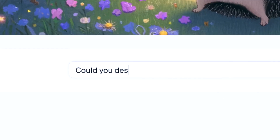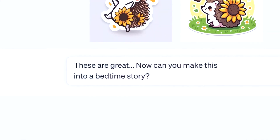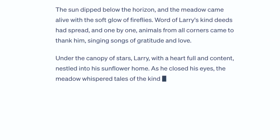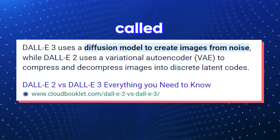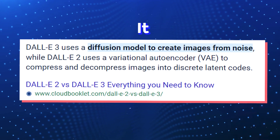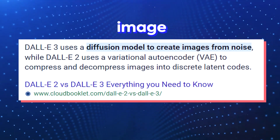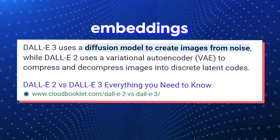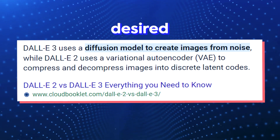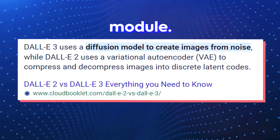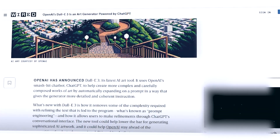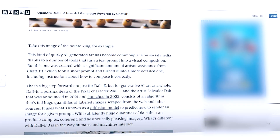DALL-E operates through a sophisticated architecture that involves several key components. At its core is a robust text encoder, which processes input text descriptions and transforms them into highly structured text embeddings representing the semantic meaning of the text. It then employs a technique called diffusion to bridge the gap between text and image, systematically converting text embeddings into image embeddings by adding controlled noise and then meticulously reversing it. Once image embeddings are generated, DALL-E leverages a powerful decoder module — employing GLIDE, a modified version of UNET — to precisely create images.